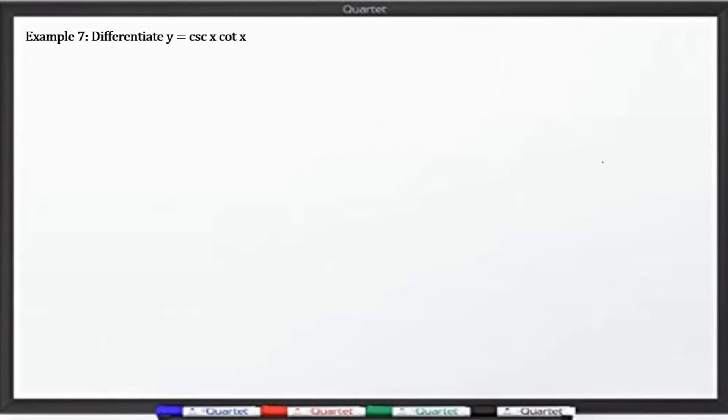We have example number 7: differentiate y equals cosecant x cotangent x. In this case, we are going to use the product rule. Ang sabi po sa atin sa product rule, sulat natin dito, product rule.